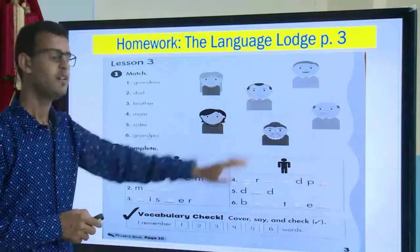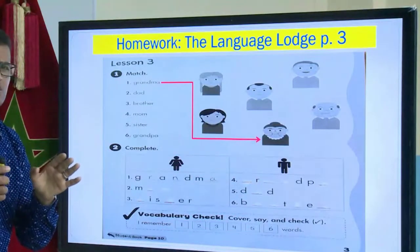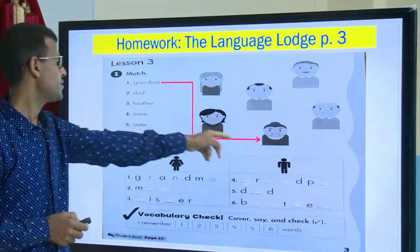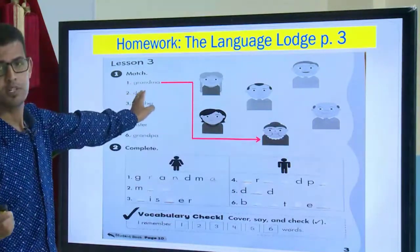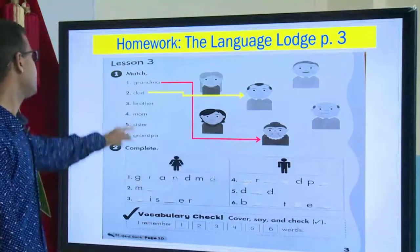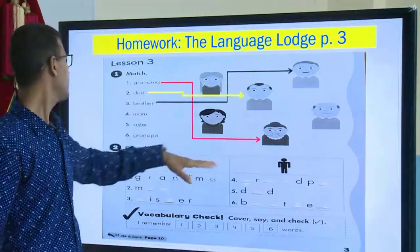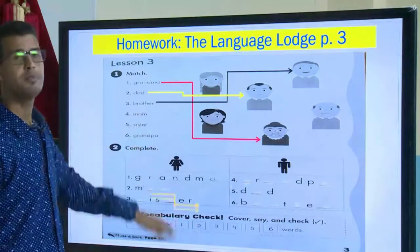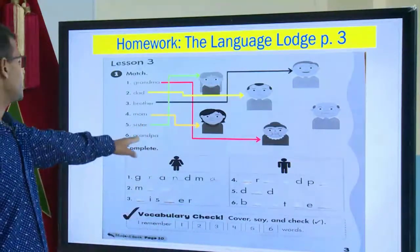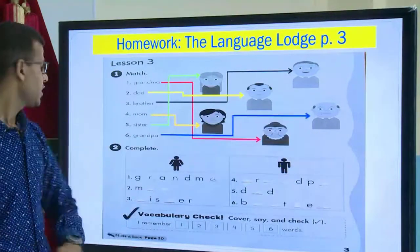Very good, this is grandma. We are not going to waste too much time here because we are going to move to our lesson. Good — dad, this is my dad. Brother — good job, this is my brother. Mom — this is my mom. Sister — this is my sister. Grandpa — this is my grandpa.